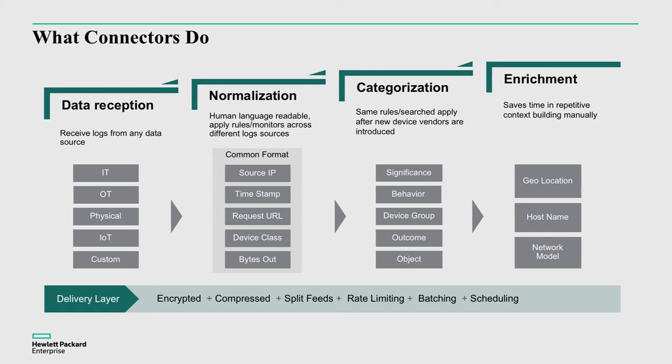Categorization becomes incredibly useful for correlation. And then there's additional enrichment — anything from filling out missing data that's not included in the raw log, such as host names, or specific data like GUID or SSID information for Windows logs. Having that data populated automatically is exactly what enrichment allows us to do. Smart connectors deliver all of this in an encrypted, secure, compressed manner. That's what smart connectors are doing, and they are a key component of ADP, the ArcSight Data Platform.